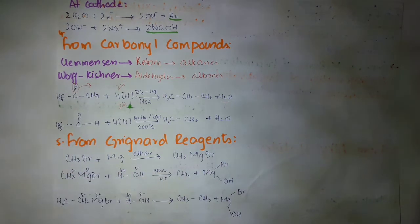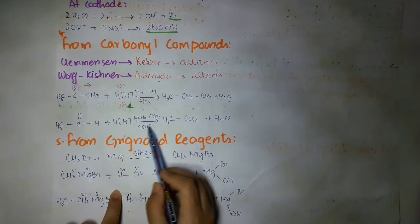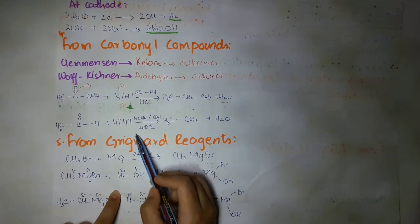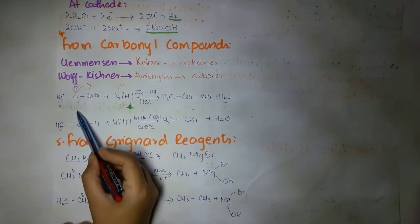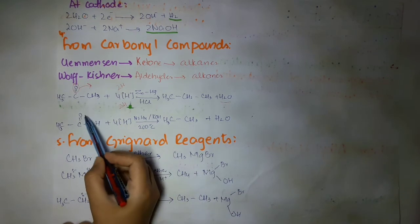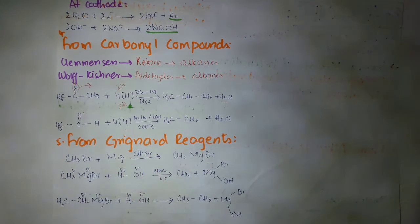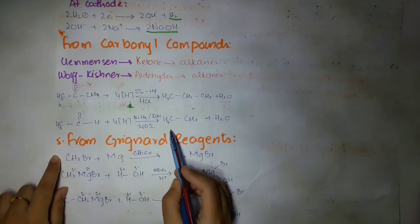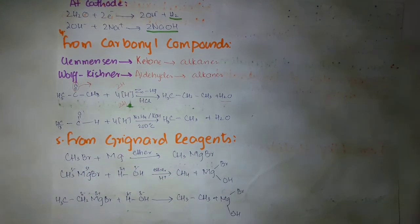This is an aldehyde — acetaldehyde. Again we are reducing it. Hydrogen is added in the presence of hydrazine and KOH at a temperature of 200 degrees centigrade. Two hydrogen atoms replace the oxygen, and the oxygen combines with two hydrogen to create water. We are left with CH3–CH2–H, which is CH3–CH3, so this is ethane — acetaldehyde has been converted into ethane.